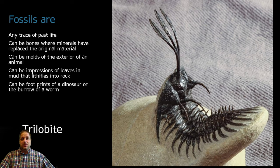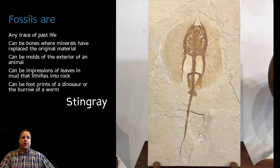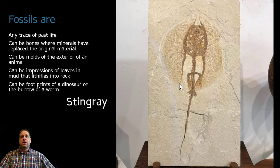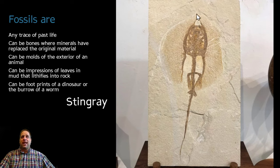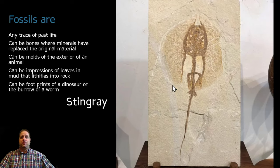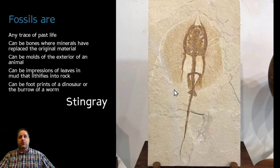There can also be impressions from things like footprints or even leaves in material. Almost any organism can be fossilized. Here we have a stingray — the softest parts of the body have not been preserved; they don't really have bones, just a cartilaginous skeleton which usually isn't preserved, but here it has been preserved in this really nice example.